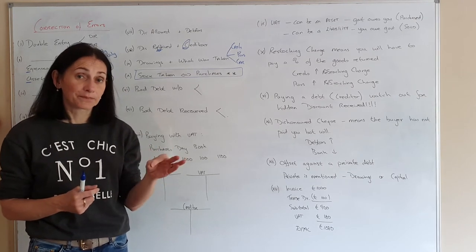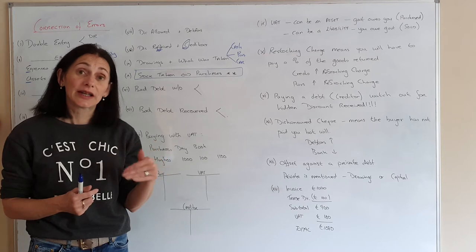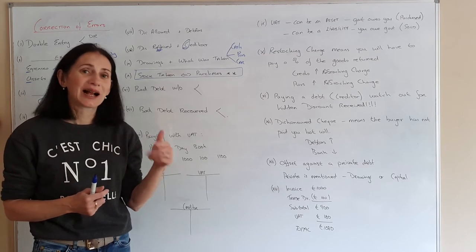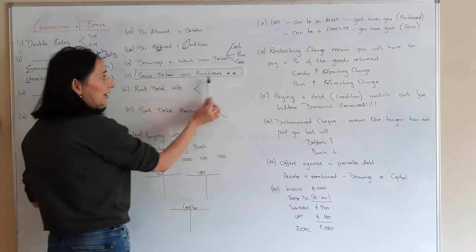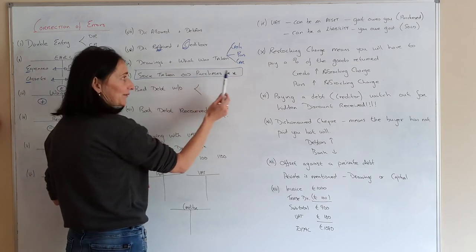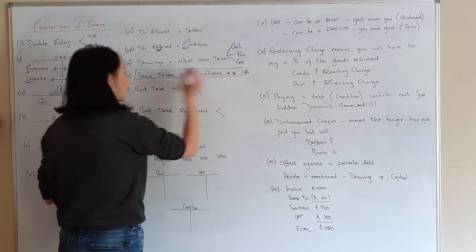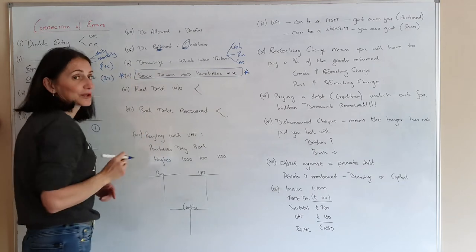So if you imagine you're a grocery shop and the owner goes in and takes milk out of it and takes bread out of it, they've taken stock. But what they've actually done is they've reduced your purchases because you can't sell that anymore. So when the owner takes stock, remember it's your purchases that's affected. Really put that in bold when you take it down.